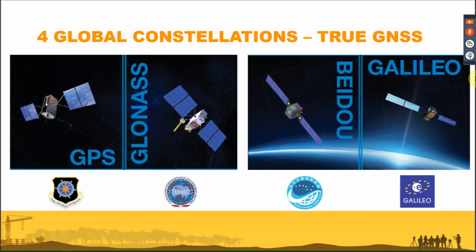The global constellations are the main systems used for high accuracy surveying, though we also have some regional systems. The four global constellations are: GPS, the American constellation; GLONASS, the Russian navigation system; Beidou, the Chinese constellation; and Galileo, the European constellation.